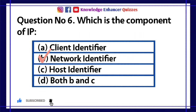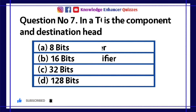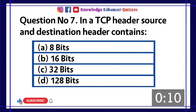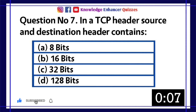Option B is the right answer. Question number 7: In a TCP header, source and destination ports contain how many bits? A. 8 bits. B. 16 bits. C. 32 bits. D. 128 bits.